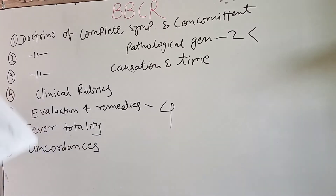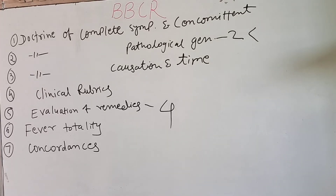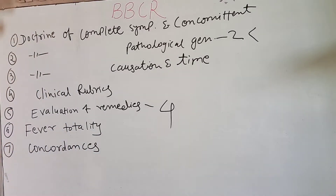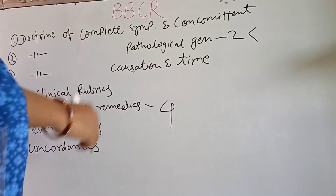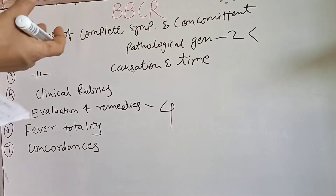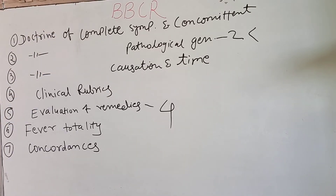The seventh fundamental concept is concordances. This chapter deals with the relationship of remedies. It helps to find out a closely related medicine which can be thought of in future follow-up if the picture changes. The second use of concordances is to find out a second medicine if the first one does not meet the expectation within the given time.